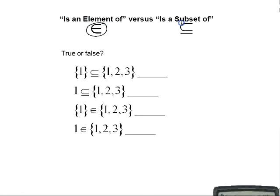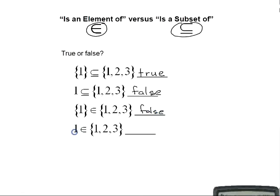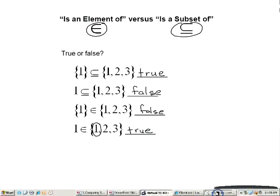Let's make sure we understand 'is an element of' versus 'is a subset of.' The set {1} is a subset of {1, 2, 3} — true. The element 1 is a subset of {1, 2, 3} — false; 1 is an element, not a set. The set {1} is an element of {1, 2, 3} — false; {1} is a subset, not an element. The element 1 is an element of {1, 2, 3} — true.